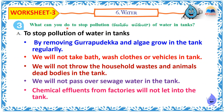What can we do to stop pollution of water tanks? To stop pollution of water in tanks: remove weeds and algae from the tank regularly. We will not take bath, wash clothes or vehicles in the tank. We will not throw household wastes and animals' dead bodies in the tank. We will not pass sewage water into the tank. Chemical effluents from factories will not be let into the tank.